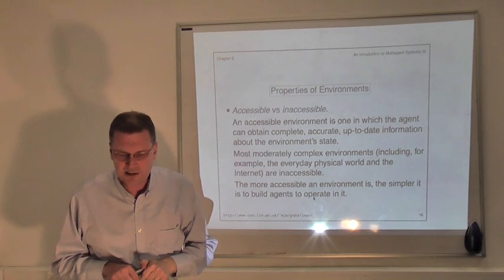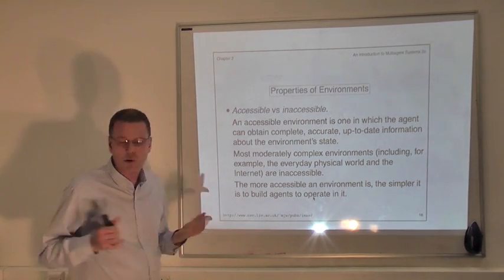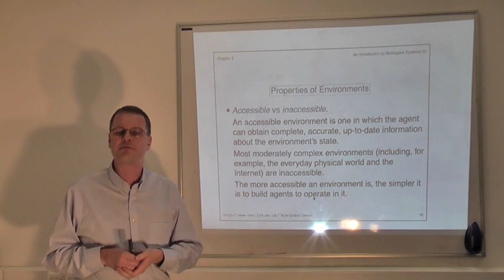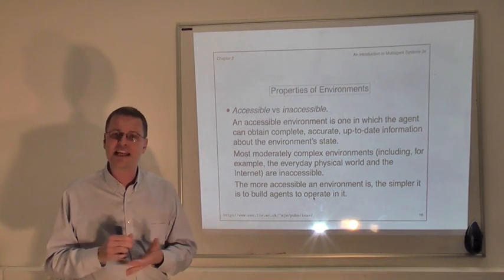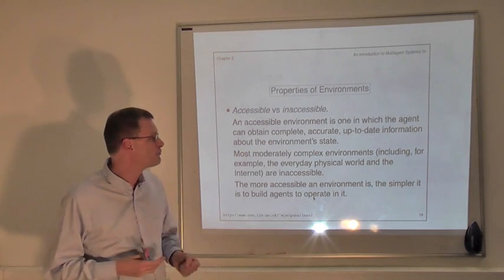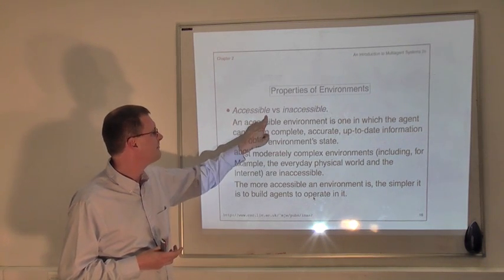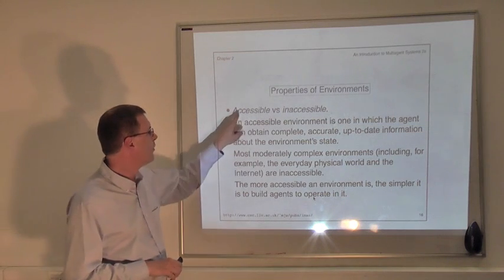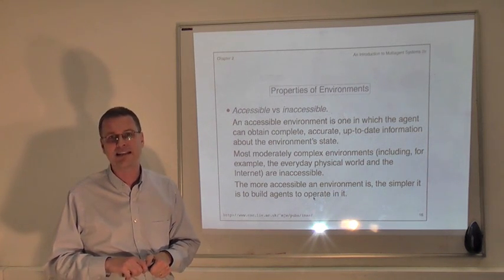The first property of environments they talked about was whether an environment is accessible or inaccessible. This means whether or not an agent can get sufficient information from its environment in order to make the right decision — that is, whether it can get complete, accurate, up-to-date information, or at least information of sufficient quality and timeliness. If the answer is yes, we say the environment is accessible; if not, it's inaccessible. Fairly obviously, the more accessible an environment is, the easier it's going to be for an agent to operate in it.